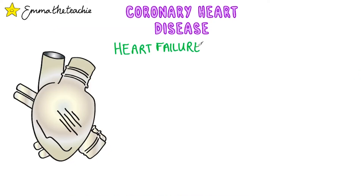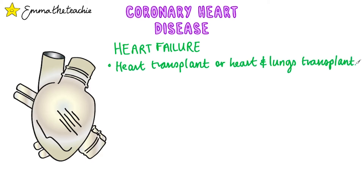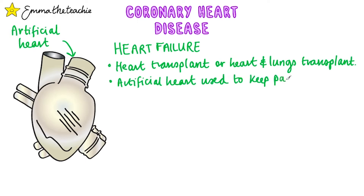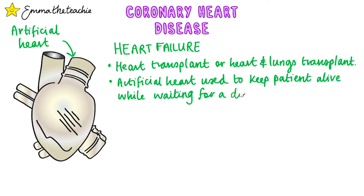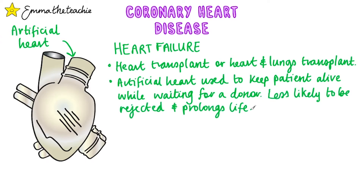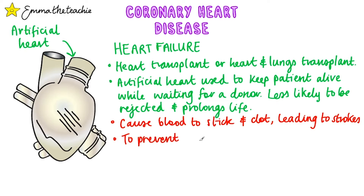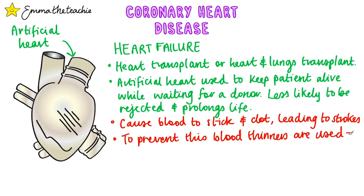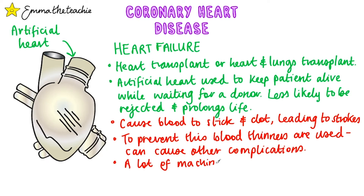If a patient has heart failure, they may require a heart transplant, or a heart and lungs transplant. This requires a donor heart, which isn't always available. Doctors may use an artificial heart to try and keep the patient alive until a donor heart is found. The big advantage of this is that it's less likely to be rejected by the patient's body, and it prolongs their life. But it can cause the blood to stick and clot, leading to strokes. To prevent this, the patient needs to take blood thinners, which have their own complications, like extended bleeding if they're in an accident. There's also a lot of machinery involved in keeping the artificial heart working, meaning patients need to stay in hospital until a donor heart is found.